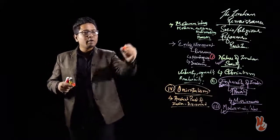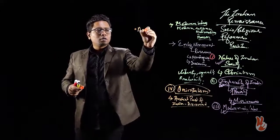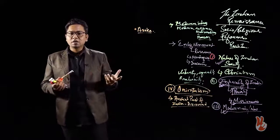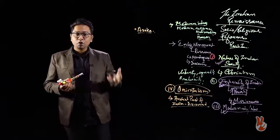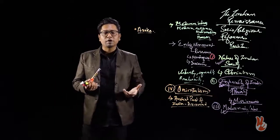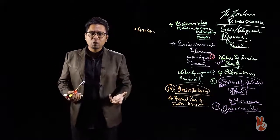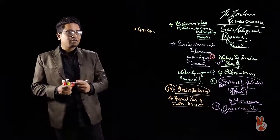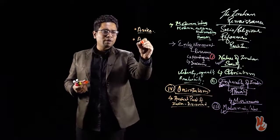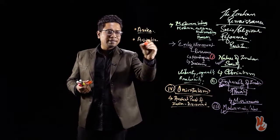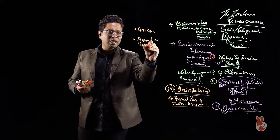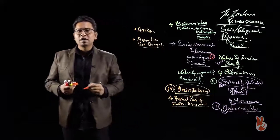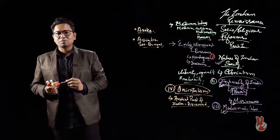In doing so, they rediscovered India's past. They rediscovered people like Asoka, about whom knowledge had been lost. Asoka was rediscovered only after the Brahmi script was deciphered and the Asokan edicts were deciphered. Societies such as the Asiatic Society of Bengal were very important in this rediscovery of India's past.